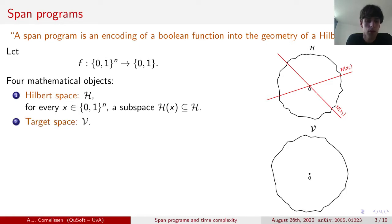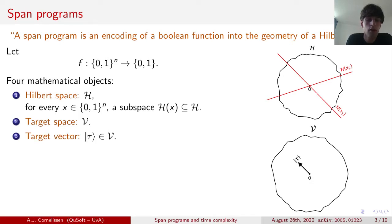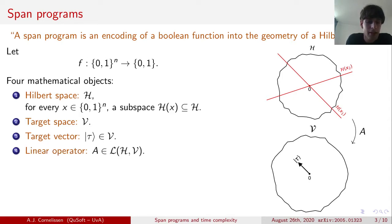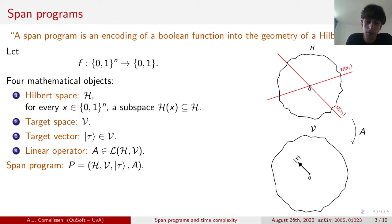Second, we define the target space, which we call V. This can be any vector space without additional structure. Third, we define a target vector, which we call tau. This can be any vector in the target space. And finally, we define a linear operator A, which maps the Hilbert space H into the vector space V. This we refer to as the span program operator. Formally, a span program is nothing more than a tuple of these four objects.